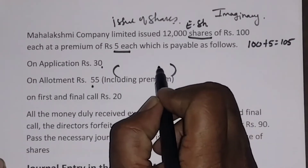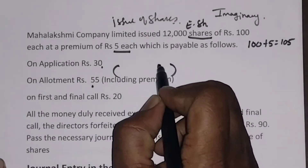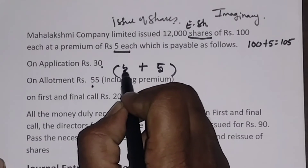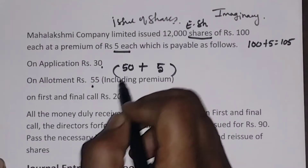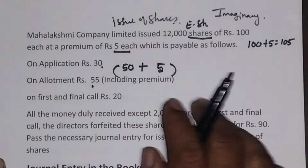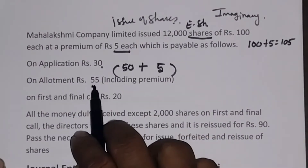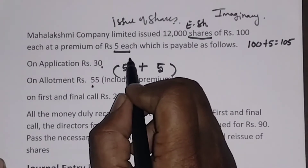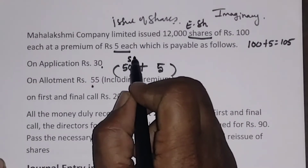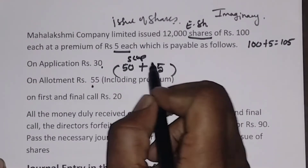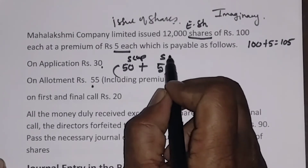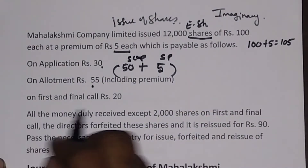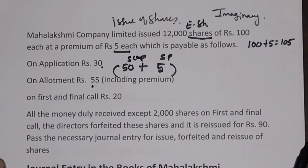Out of Rs. 55, Rs. 5 is premium. Therefore Rs. 50 is on share capital. We have to split and write: Rs. 50 will go to share capital and Rs. 5 will go to securities premium. The third installment is on first and final call, Rs. 20.